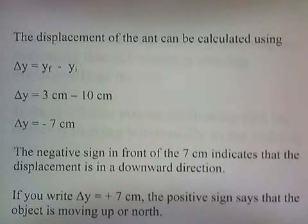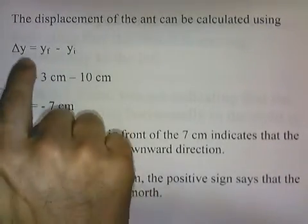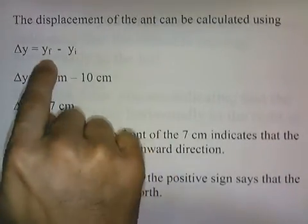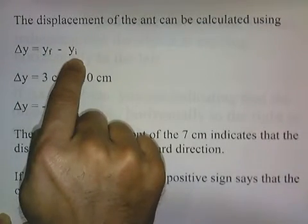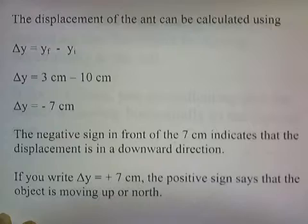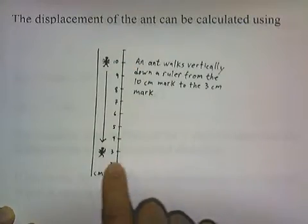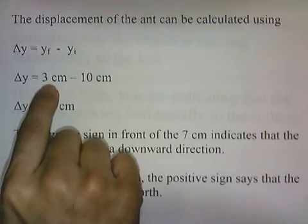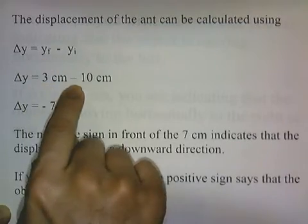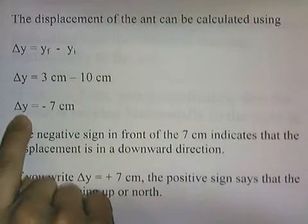The displacement of the ant can be calculated using delta y equals yf minus yi. yf is the final vertical position of the ant; yi is the initial vertical position. The initial vertical position is 10cm and the final vertical position is 3cm. So it's going to be 3cm minus 10cm, which gives us delta y.